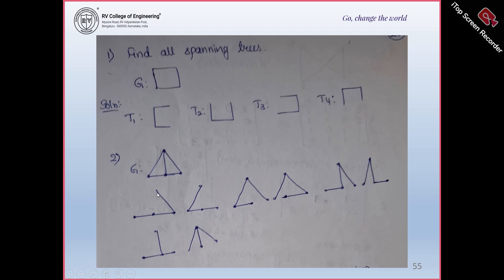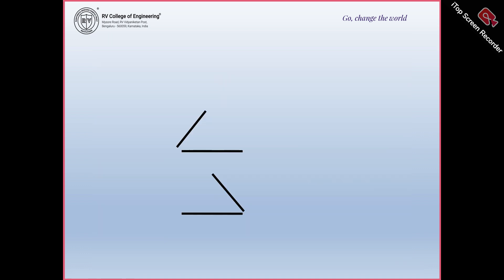Now suppose you have this graph. Since the number of vertices is four, the number of edges must equal three in the spanning tree. But here there are five edges, so I have to remove two edges from this graph. If I remove this edge and this edge, I will get this spanning tree. The spanning tree has to be connected, must contain all vertices, and the number of edges must equal three. These are all the possible spanning trees for the given graph G.